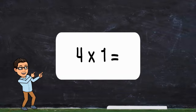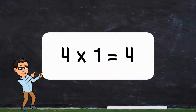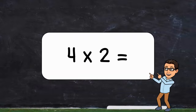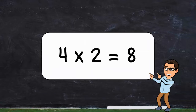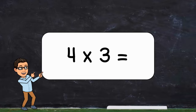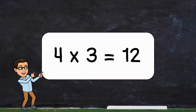Four times one. Four times one equals four. Four times two. Four times two equals eight. Four times three. Four times three equals twelve.